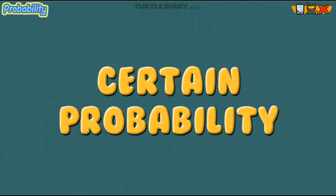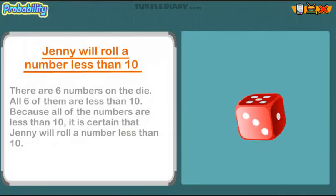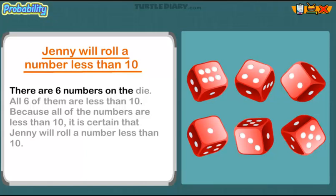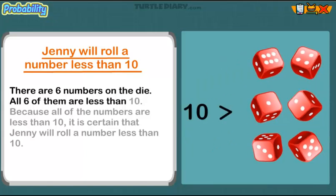Certain probability. Jenny will roll a number less than ten. There are six numbers on the die. All six of them are less than ten. Because all of the numbers are less than ten, it is CERTAIN that Jenny will roll a number less than ten.